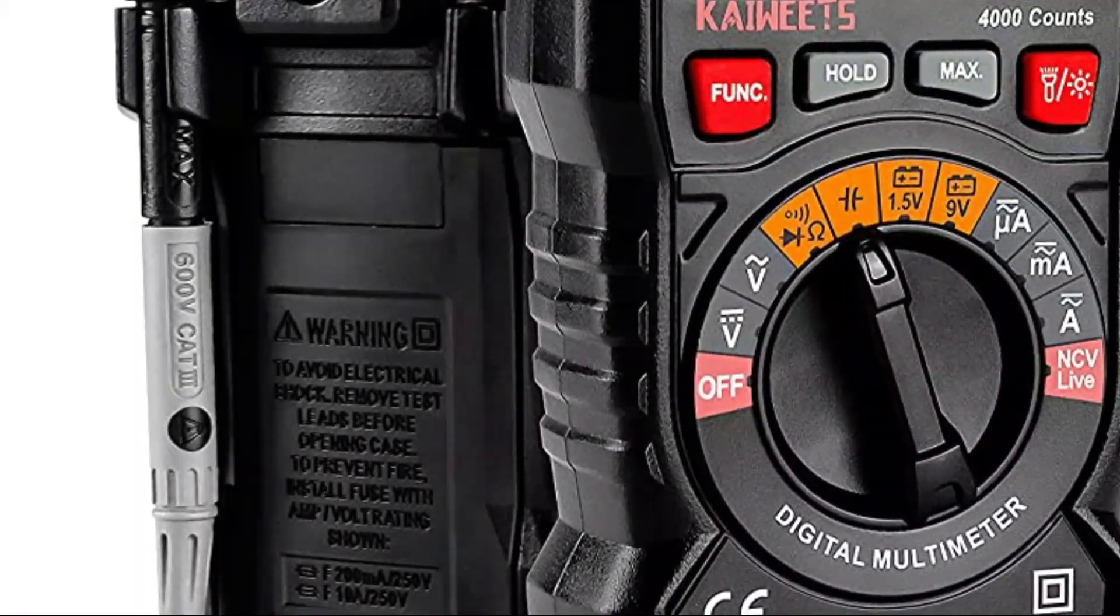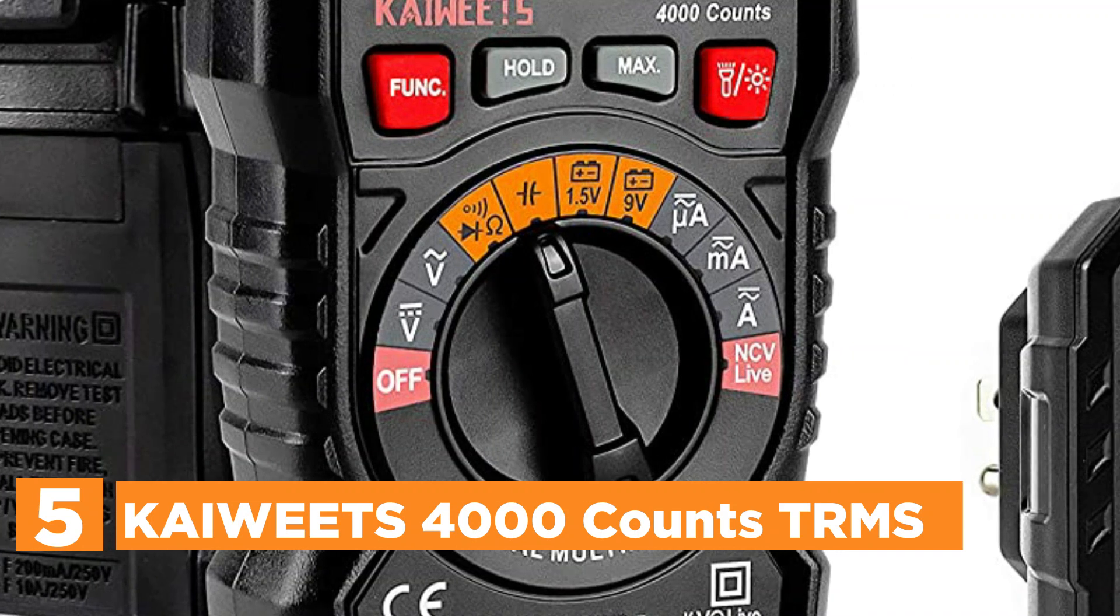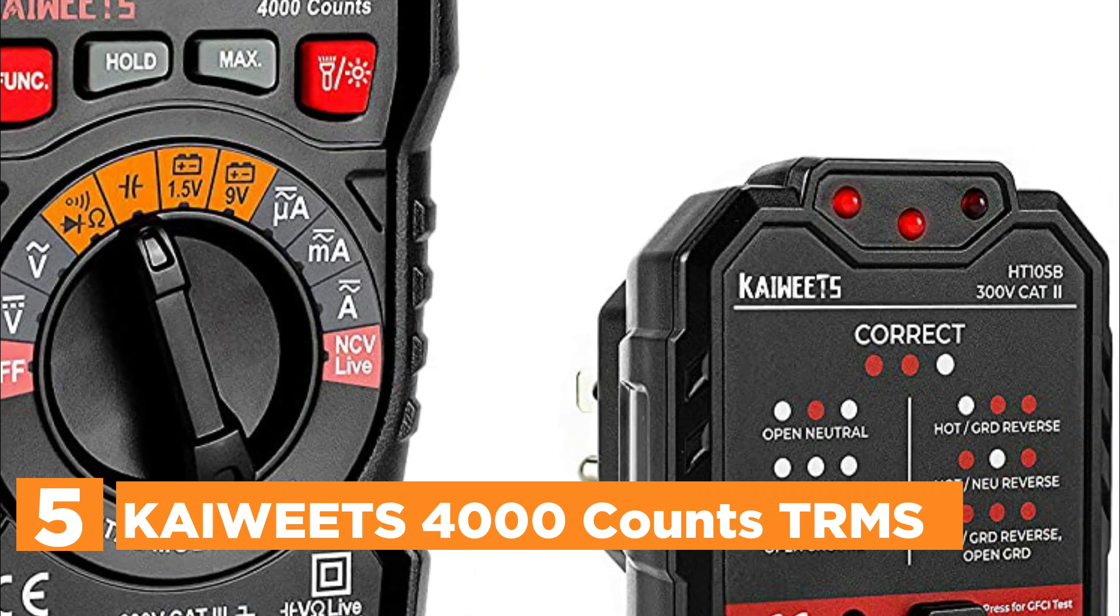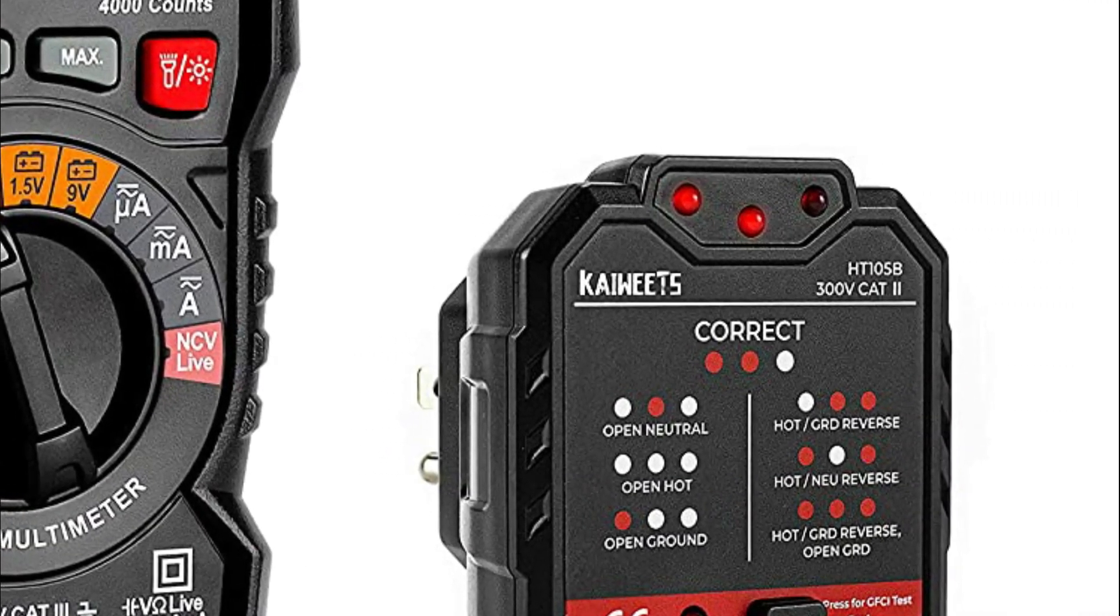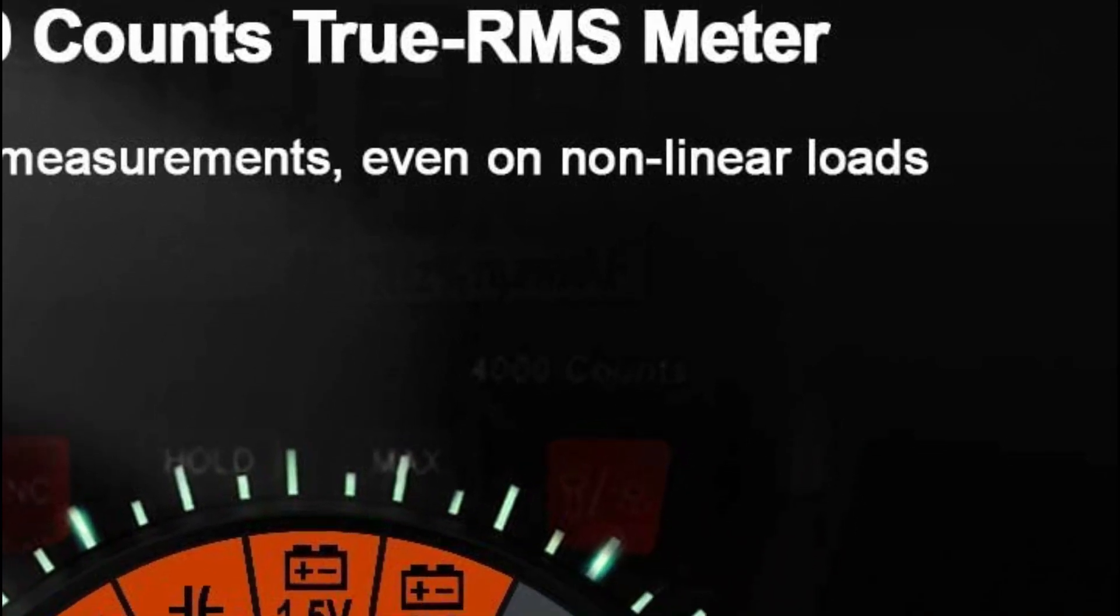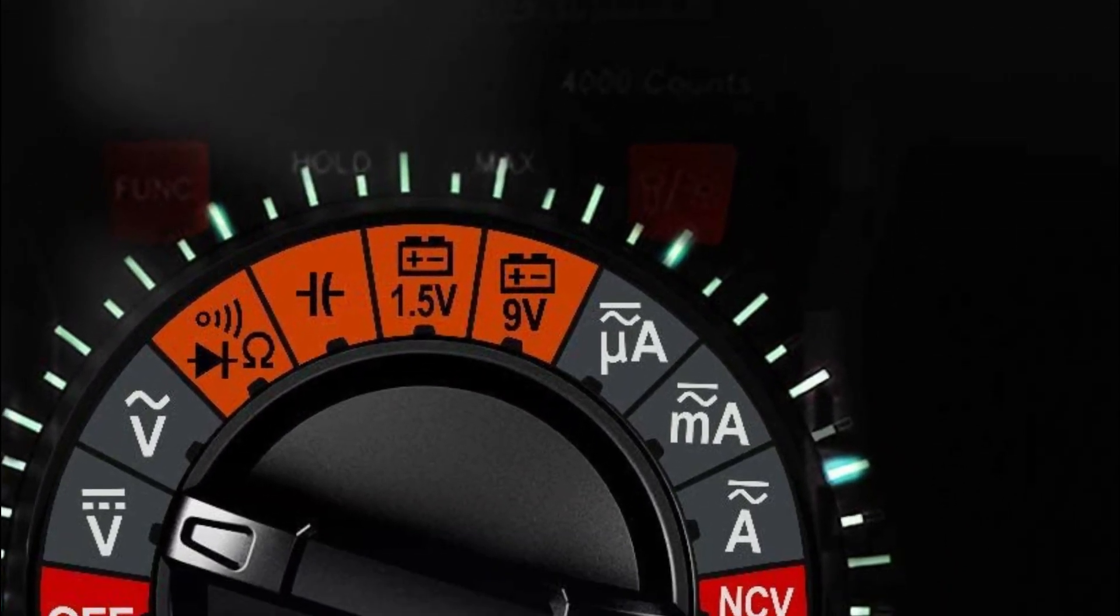Starting off our list at number 5, Kiwi's 4000 Counts TRMS. A protective case made of silicone will effectively protect the machine from being damaged by falling. 10A Fused to Protect Against Overload. It has an anti-high voltage circuit inside that ensures security when used. It detects the low and standard voltage.